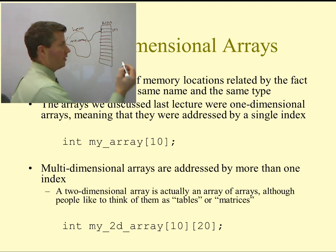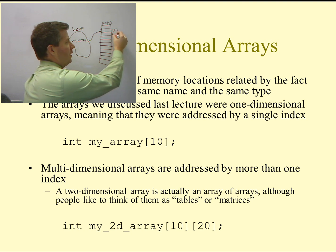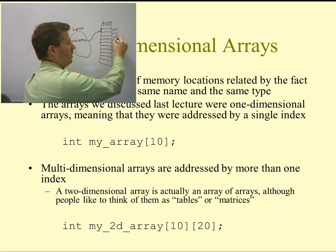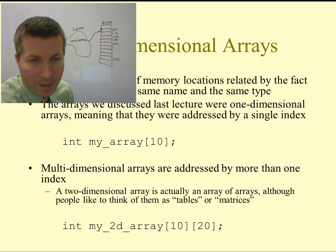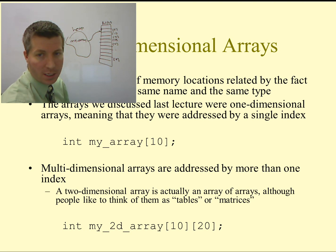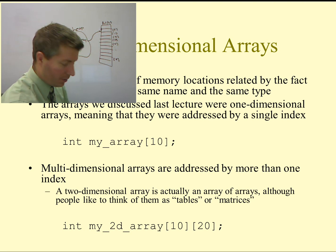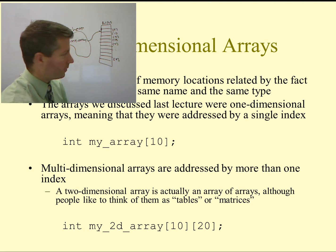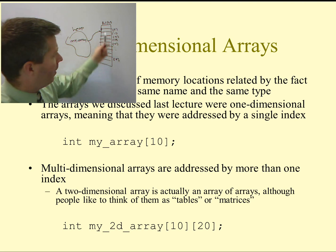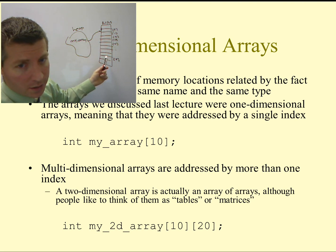In subsequent locations of memory, we have each of the next variables in this array, all the way down to index 9. So we have myArray sub-zero up to myArray sub-nine, because myArray was created with 10 elements inside of it. They are in sequential locations of memory.